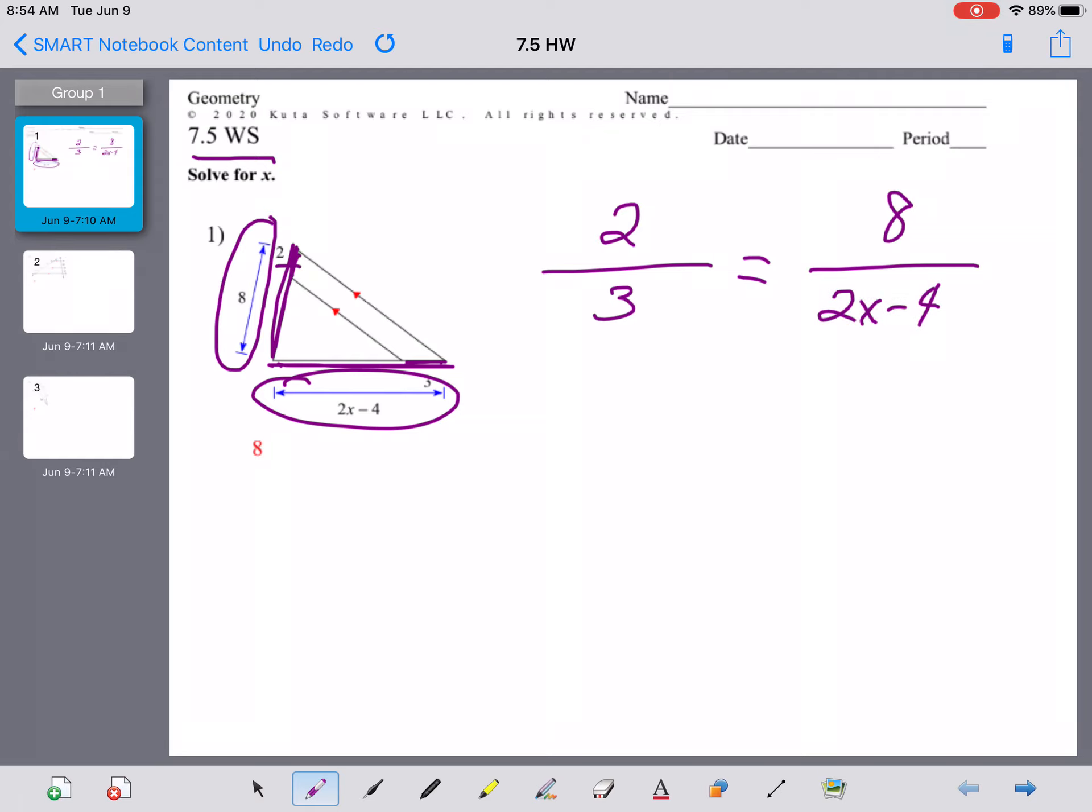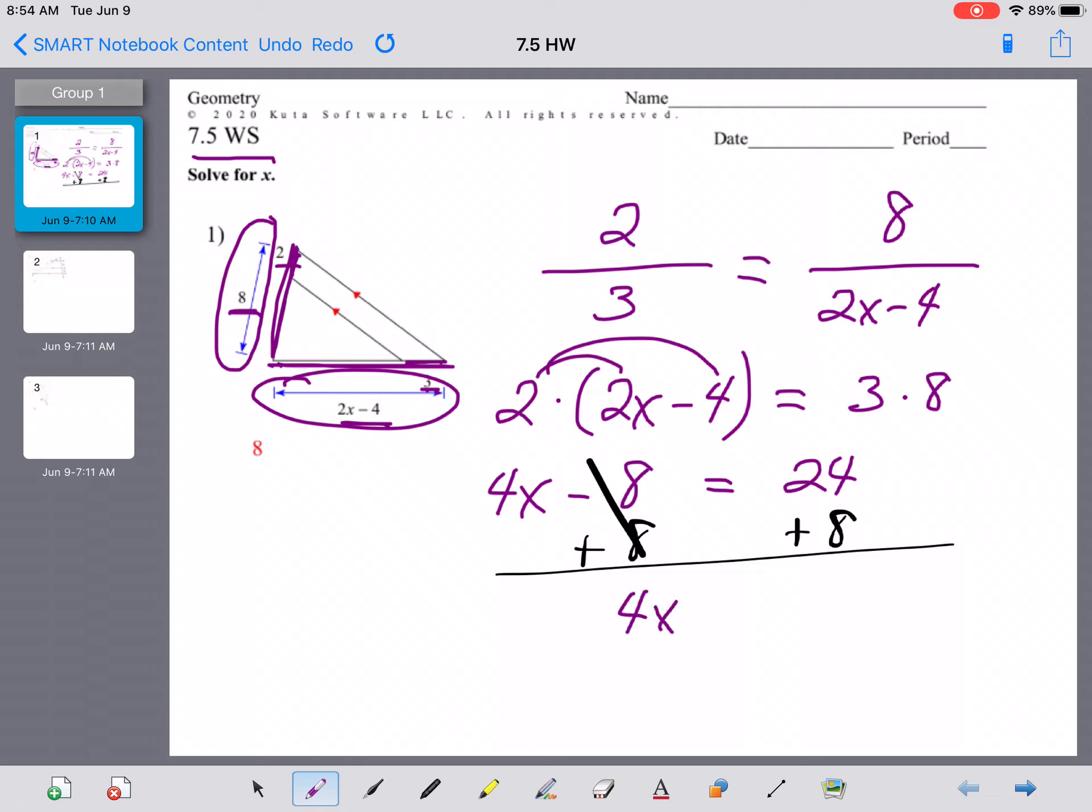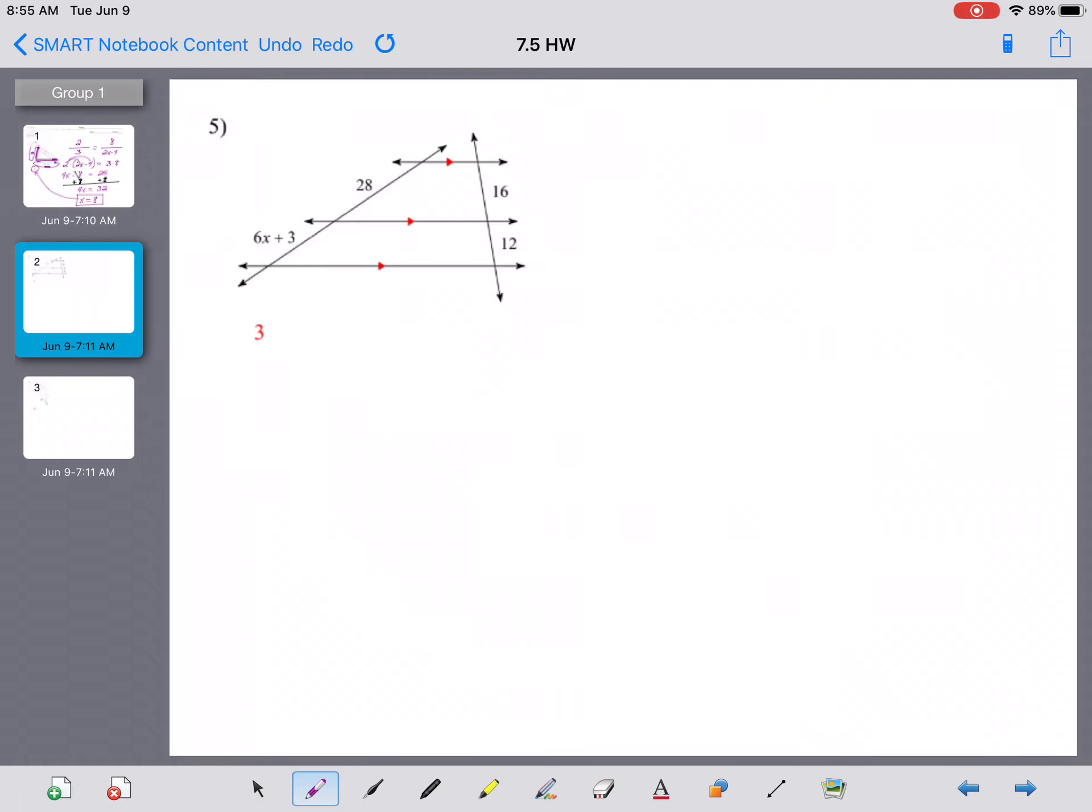So the two goes along with the three and the eight corresponds to the 2x minus 4. Let's cross multiply. We're going to multiply the 2 times the binomial (2x minus 4), and that's going to equal the product of 3 times 8. You're probably going to want to distribute that 2 to get 4x minus 8. That's going to equal 24, and from here nothing too bad. We're going to add an 8 on both sides. Those will cancel and we get 4x equals 32. We're going to divide by 4, and we get x equals 8. Woohoo! All right, there's number 1. 2, 3, and 4 should be similar to that.